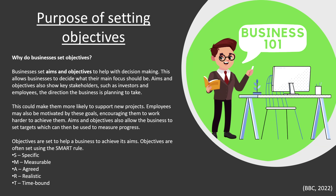So what is the purpose of setting objectives? Businesses set aims and objectives to help with decision making — this allows businesses to decide what their main focus should be. Aims and objectives also show key stakeholders, such as investors and employees, the direction the business is planning to take, helping inform others so they can work with what you're doing and get the right picture of how the business is trying to transform itself. This can make them more likely to support new projects.